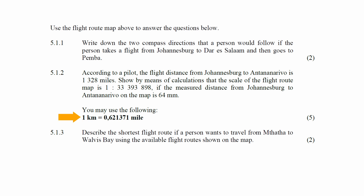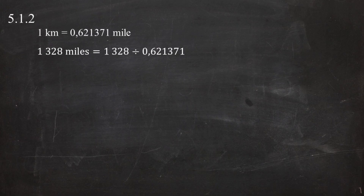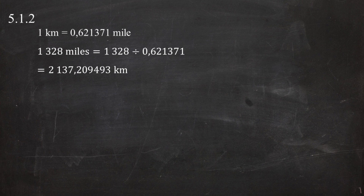You may use the conversion factor 1 kilometer equals 0.621371 miles. From this conversion factor, we can convert 1,328 miles to kilometers: 1,328 miles divided by 0.62137 miles per kilometer equals 2,137.209493 kilometers.